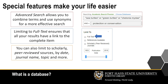Unlike web searches such as Google Scholar, which have very few options for limiting and focusing your search, Forsyth Library databases have special features that make your life easier. For example, Advanced Search allows you to combine terms and use synonyms for a more effective search. Using the full text limiter ensures you will have complete access to results by screening out those that have only a summary available.